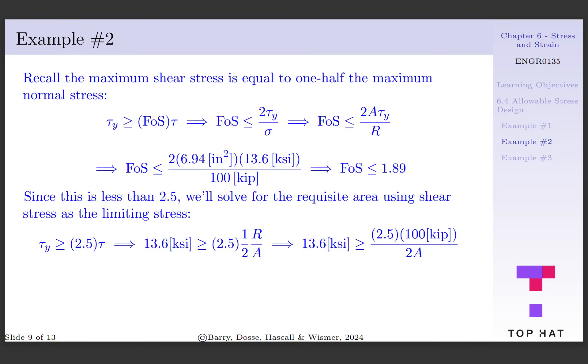Starting with tau sub y must be greater than or equal to our factor of safety times tau. This is equal to 13.6 ksi greater than or equal to 2.5 times one-half R per A.